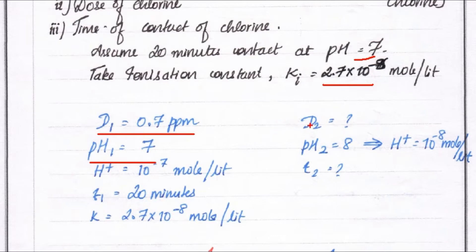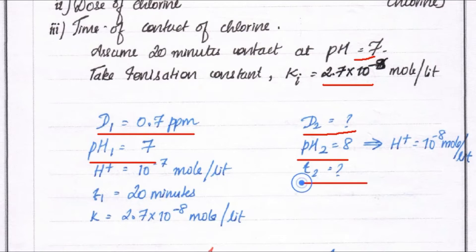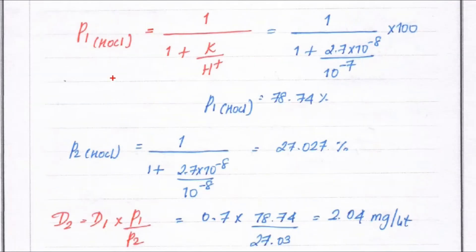For the first question, we need to find dosage D2 at pH2 = 8, where H⁺ ion = 10⁻⁸ mole per liter. We also need to find the time of contact T2. The formula for P (percentage HOCl) is: P = 1 divided by (1 + K / [H⁺]).